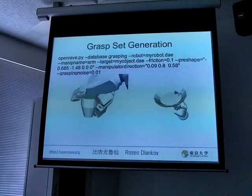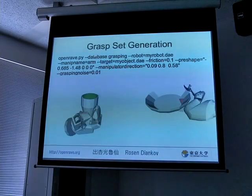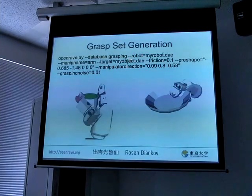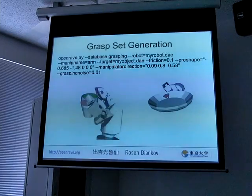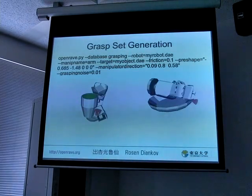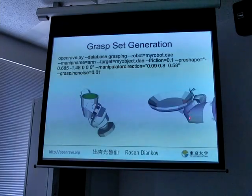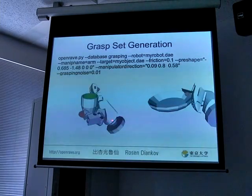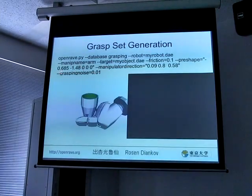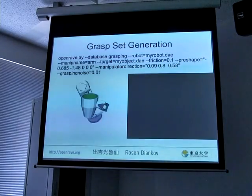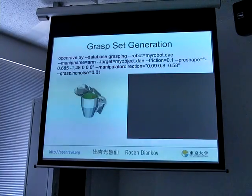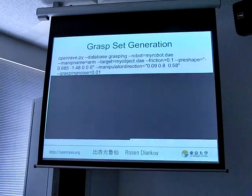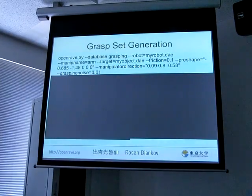Then we move on to grasp set generation — again it's another database. This time it's grasping. You specify a robot, your target object, the manipulator you want to do grasping with, and other parameters. You'll note that sometimes these grasps are not ideal. In OpenRAVE, the way we handle this is by adding grasping noise, which simulates the jitter of the object, to make sure that if the object is offset by even one centimeter, we'll still be able to grasp it robustly. The videos shown didn't use this parameter because grasp generation sets take a long time, but for anyone using it on real robots, this is recommended.